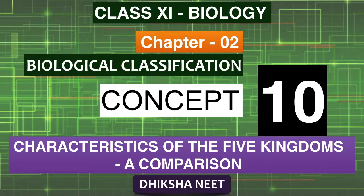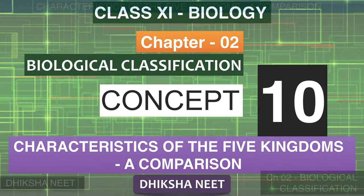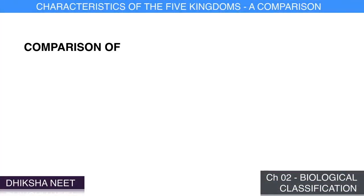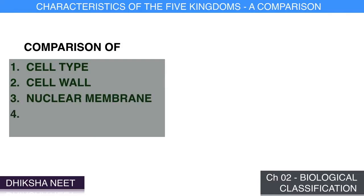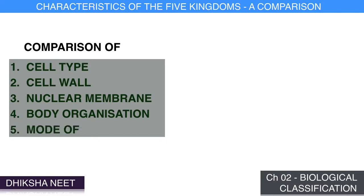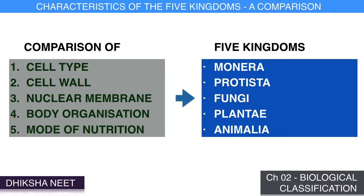Hello everyone. Let us see the tenth concept: characteristics of the five kingdoms — a comparison. The discussion here helps you understand the following: comparison of one, cell type; two, cell wall; three, nuclear membrane; four, body organization; five, mode of nutrition — of the five kingdoms: Monera, Protista, Fungi, Plantae, and Animalia.